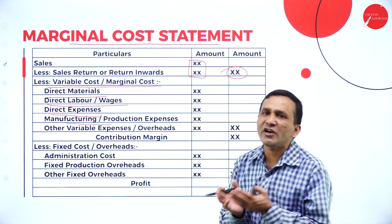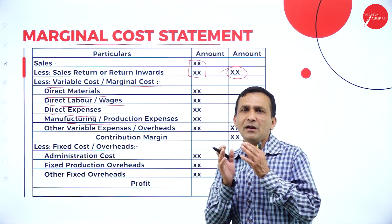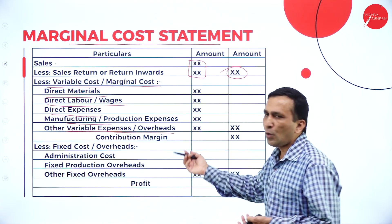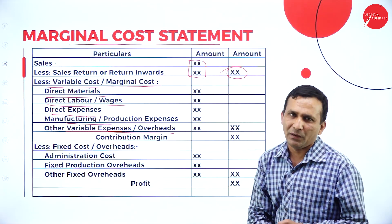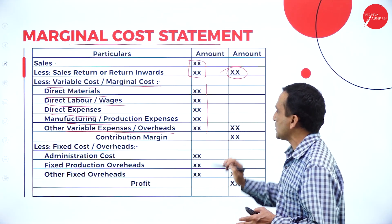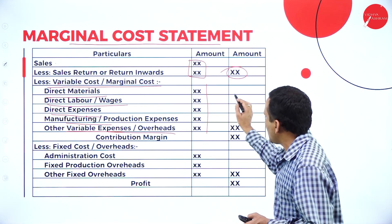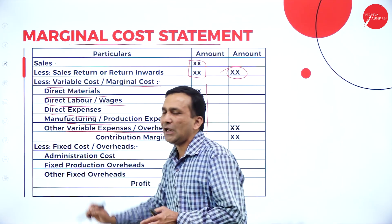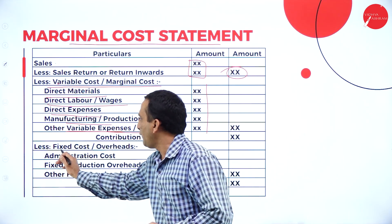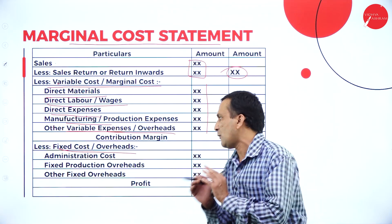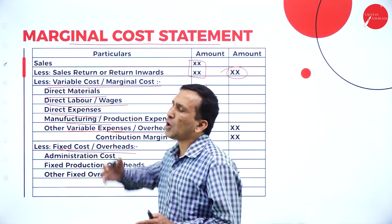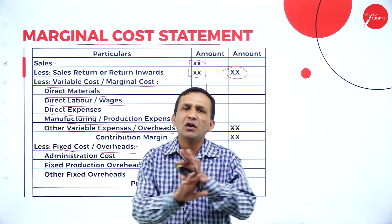Manufacturing or production-related variable items or variable expenses are considered here. Other variable expenses and other overheads that are completely variable are also included. Take the total together and write it in the outer column. From the sales, we subtract the variable cost or marginal cost, and you immediately get the contribution margin or contribution.